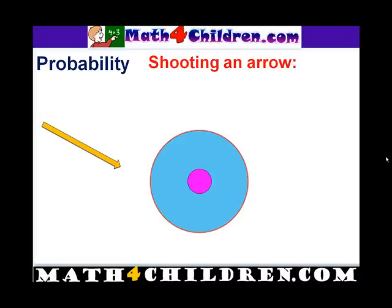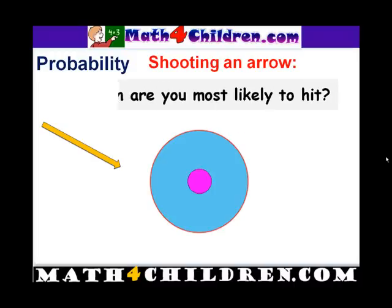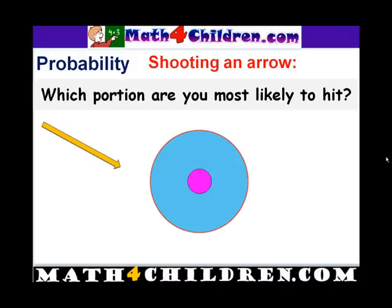Today we'll talk about shooting an arrow onto this board. Which portion are you most likely to hit if you shoot an arrow to that board? Let's try.